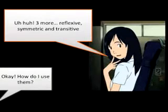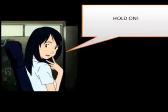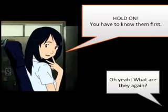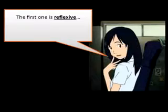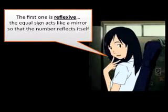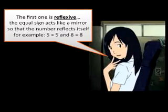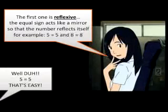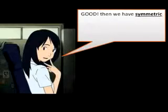Okay, how do I use them? Hold on, you have to know them first. What are they again? The first one is reflexive. The equal sign acts like a mirror, so the number reflects itself. For example, five equals five and eight equals eight. Well, duh — five equals five. That's easy.